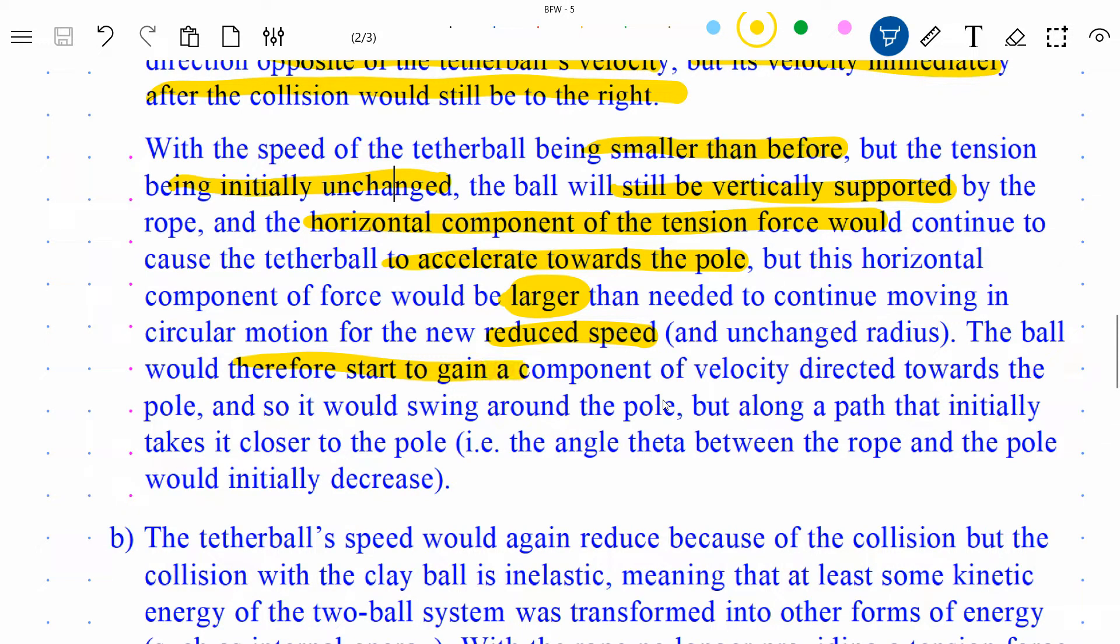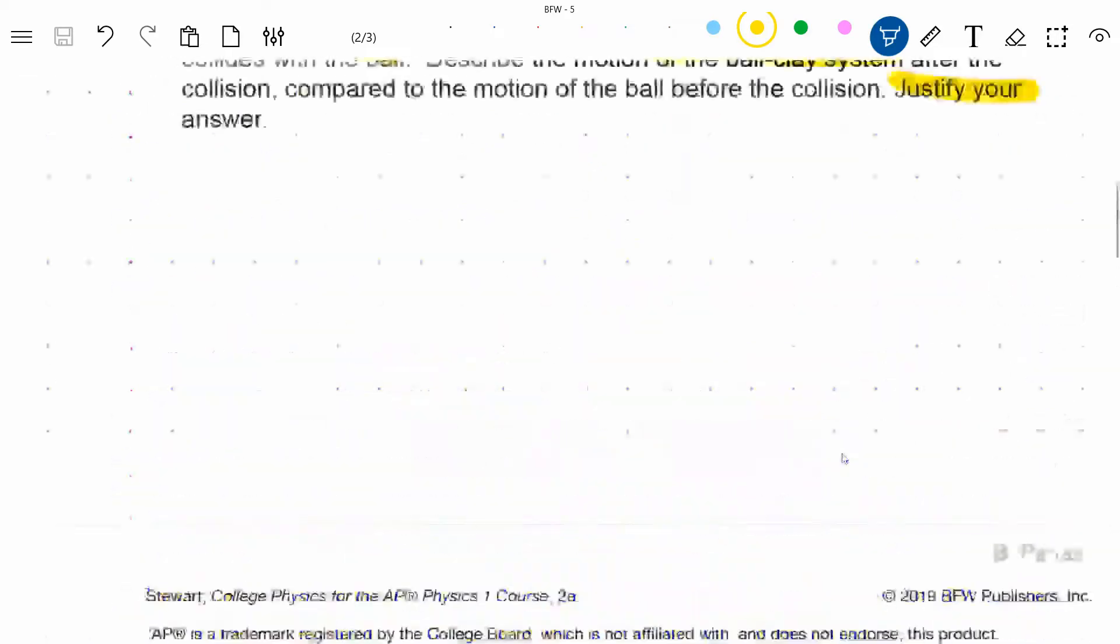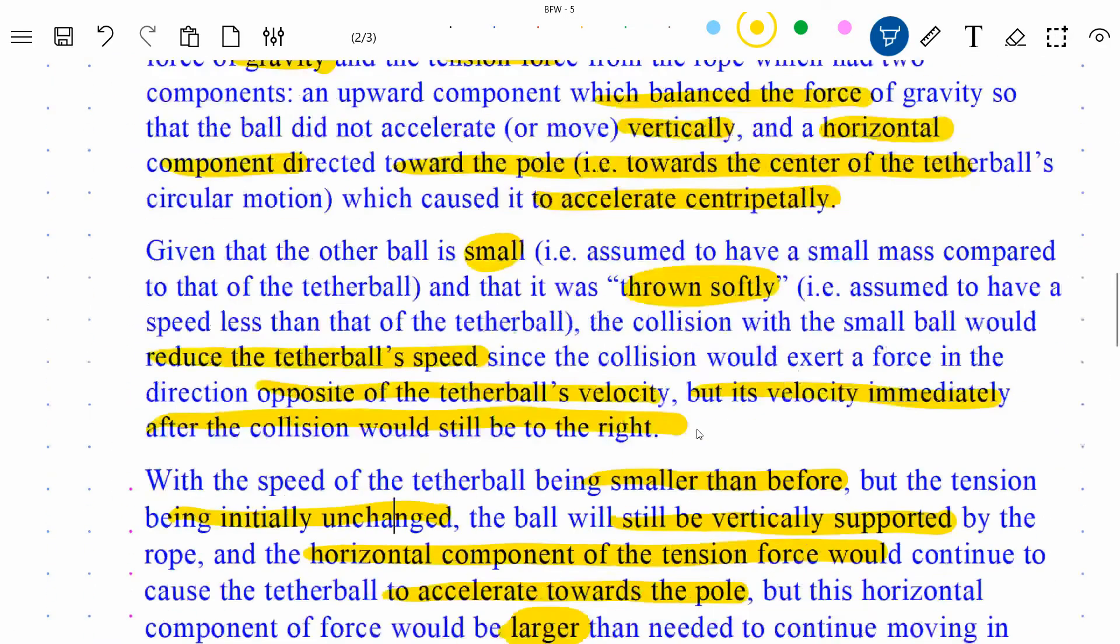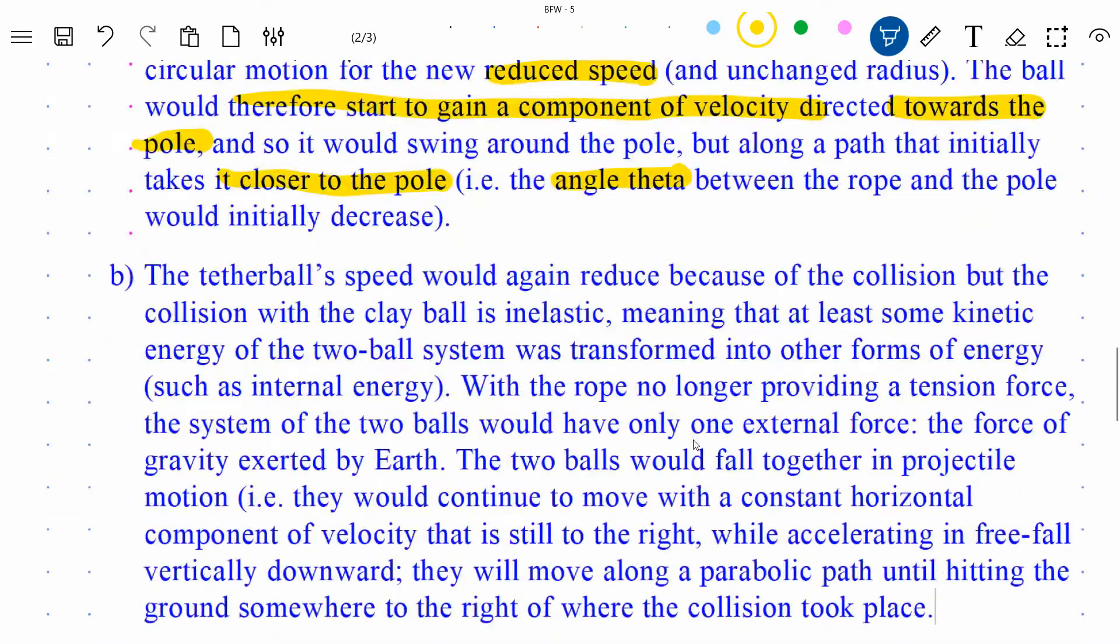But, this is kind of the important part in my opinion, but this horizontal component of force would be larger than needed to continue moving in the circular motion for the new reduced speed and unchanged radius. So if you think about the equation for centripetal acceleration, even though I didn't write it down here, a centripetal is v squared over r. So we have a smaller v, we have the same r, so to accelerate centripetally in uniform circular motion would be a smaller acceleration. So the ball has a larger acceleration than it should to maintain circular motion. So the ball would therefore start to gain a component of velocity directed towards the pole. In other words, it is not going to maintain movement along a circular path. And so it would swing around the pole but along a path that initially takes it closer to the pole—i.e., the angle theta, which was in the diagram, that angle theta is going to get smaller as it moves inwards somewhat.